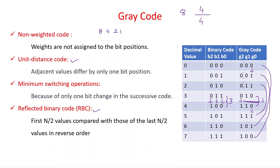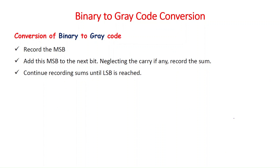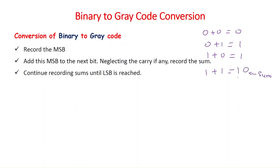That is the overall general discussion about grey code. Now moving to binary-to-grey code conversion, which can be done by two methods. One is the addition of binary bits, and the other uses XOR gates. This video focuses on the binary addition method. The basic binary addition rules are: 0+0=0, 0+1=1, 1+0=1, and 1+1=10, where 0 is the sum and 1 is the carry.